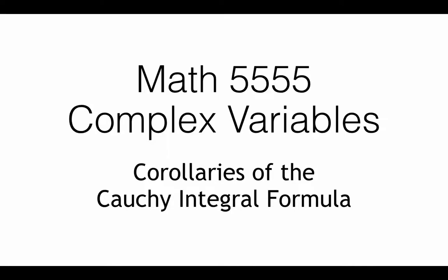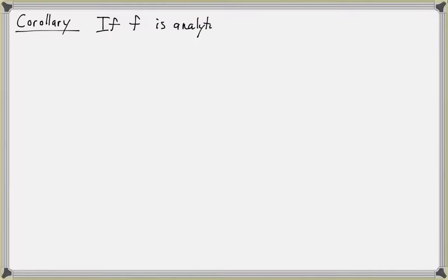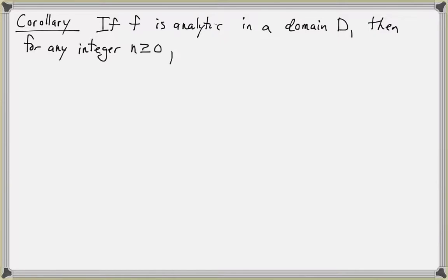We will now prove some corollaries to the Cauchy Integral Formula. The first corollary states that if F is analytic in a domain D, then the derivative of F of any order is analytic in D as well. So for any integer n greater than or equal to 0, the nth derivative of F is analytic in D. This is a consequence of the general Cauchy Integral Formula.